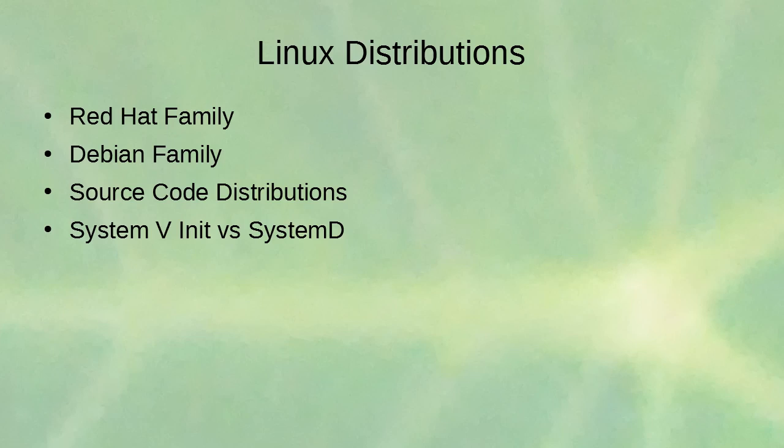In the Linux world there are many different families of distributions. You have the Red Hat family, the Debian family, source code distributions, and a recent debate about changing from init to systemd. Most distributions have switched to systemd, but some are still on the old init system.